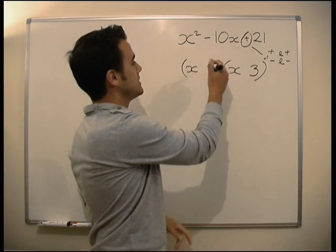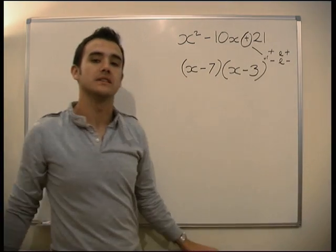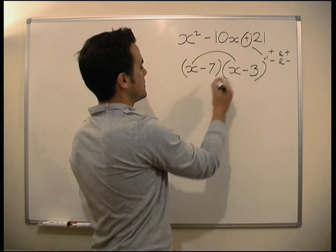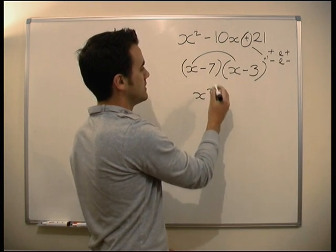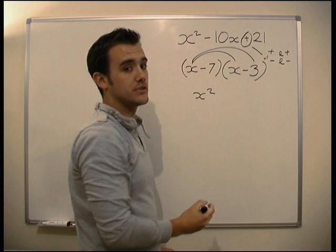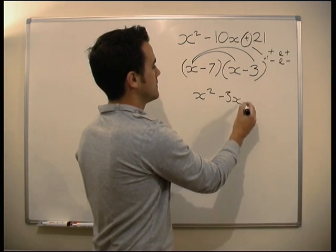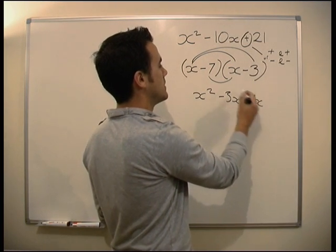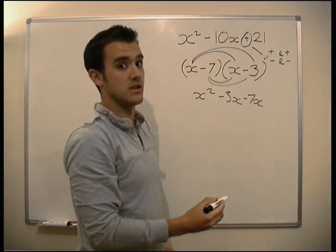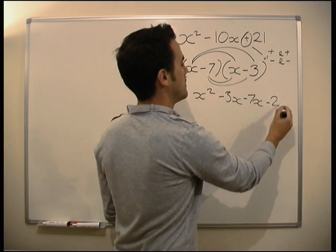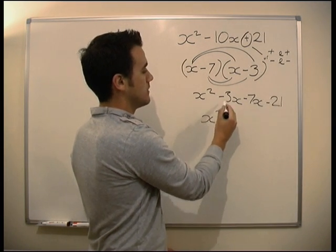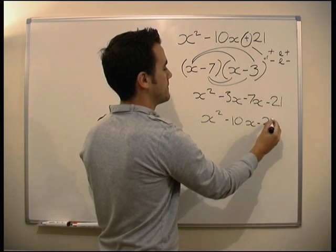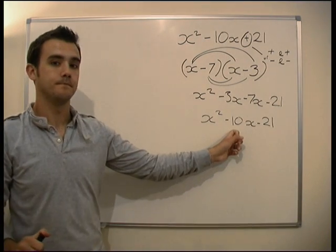These questions are that straightforward. Let's just check it. x times x is x squared, x times minus 3 is minus 3x, minus 7 times x is minus 7x, minus 7 times minus 3 is plus 21. There we go, x squared minus 10x plus 21. We've got our answer done.